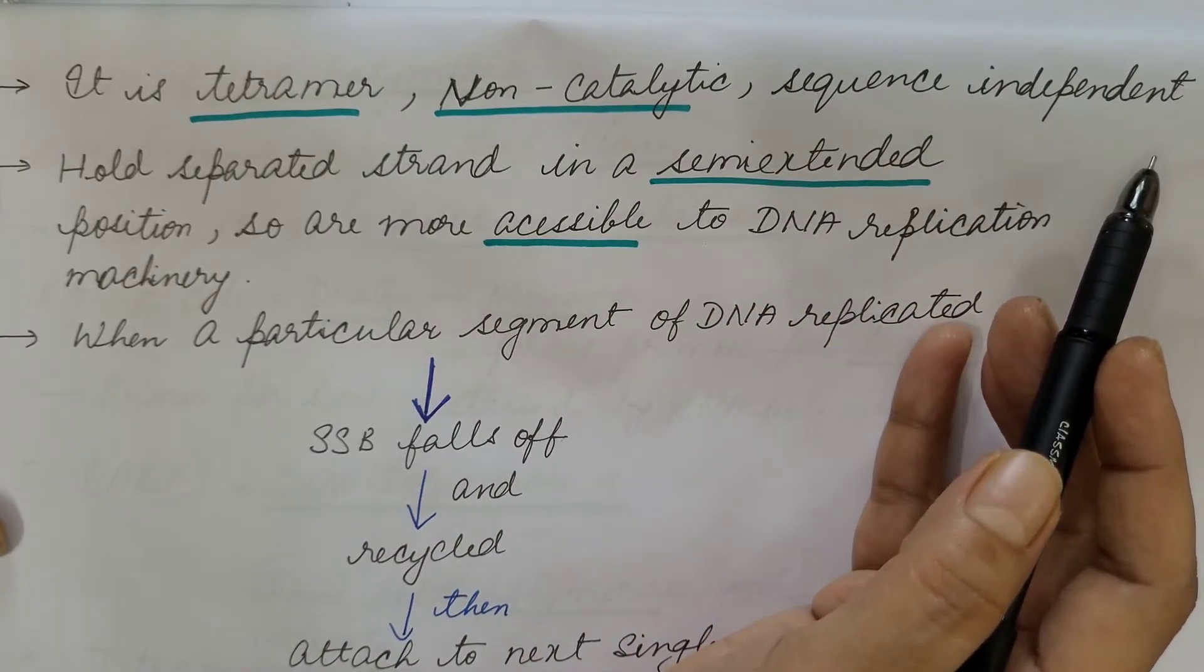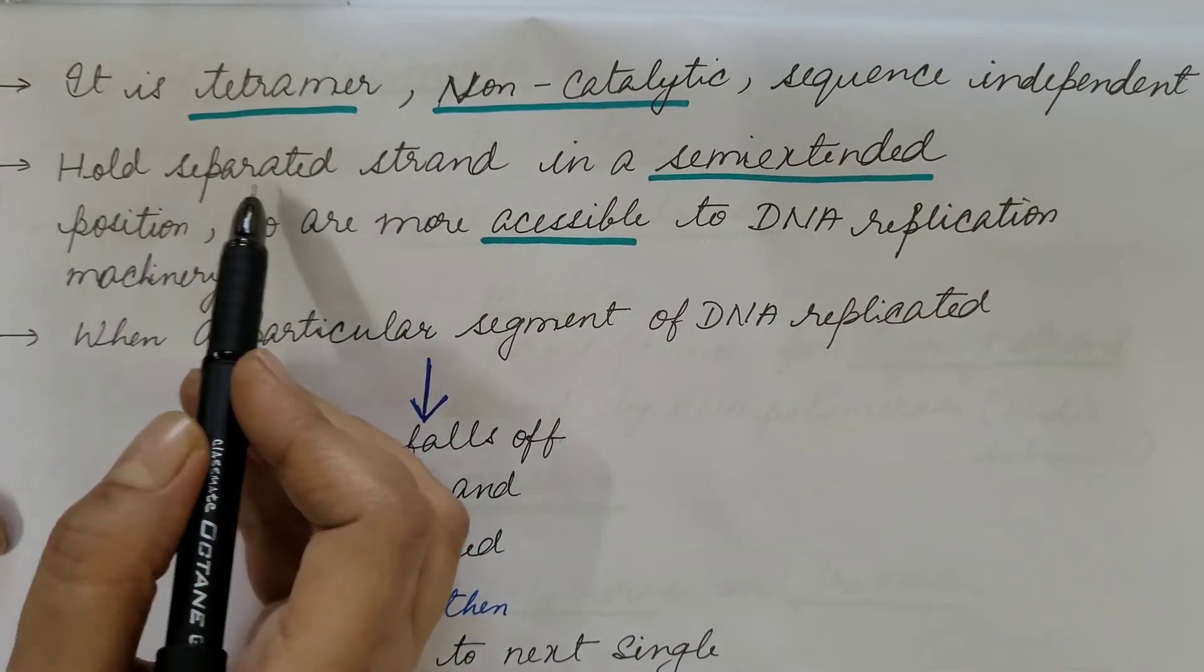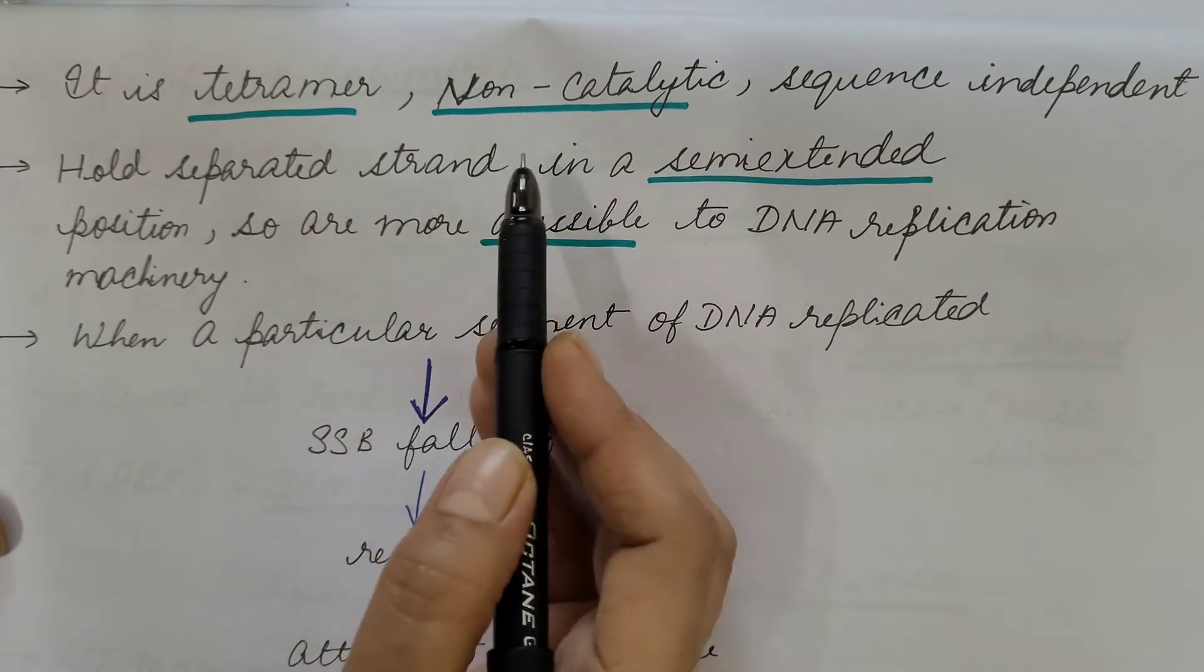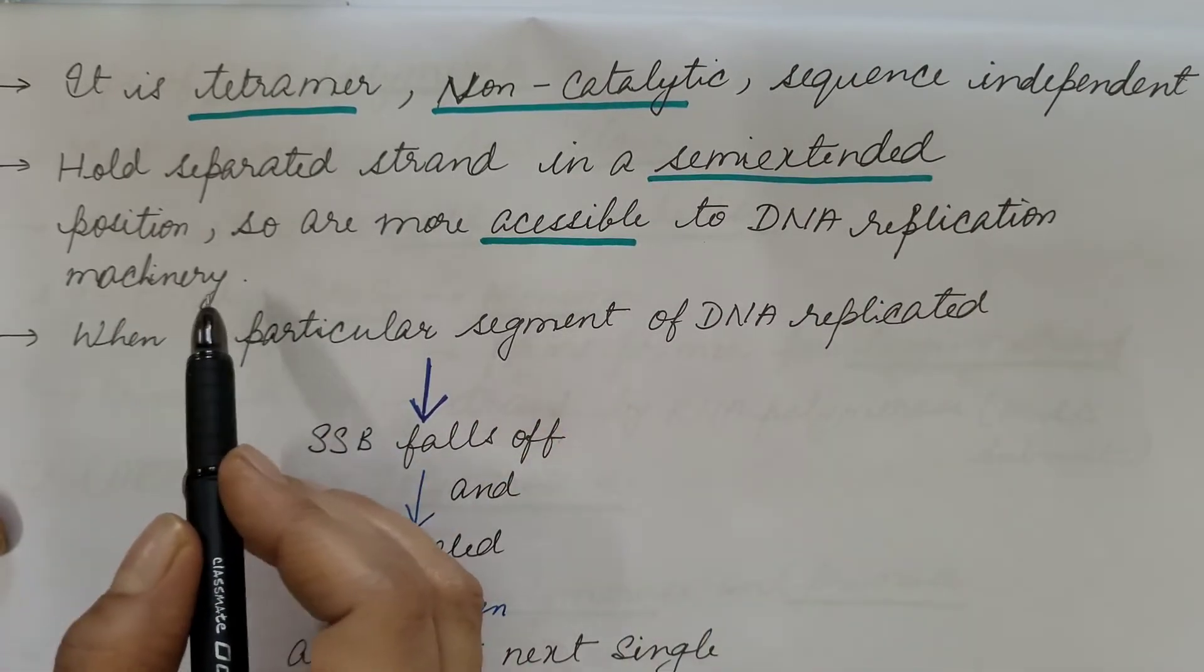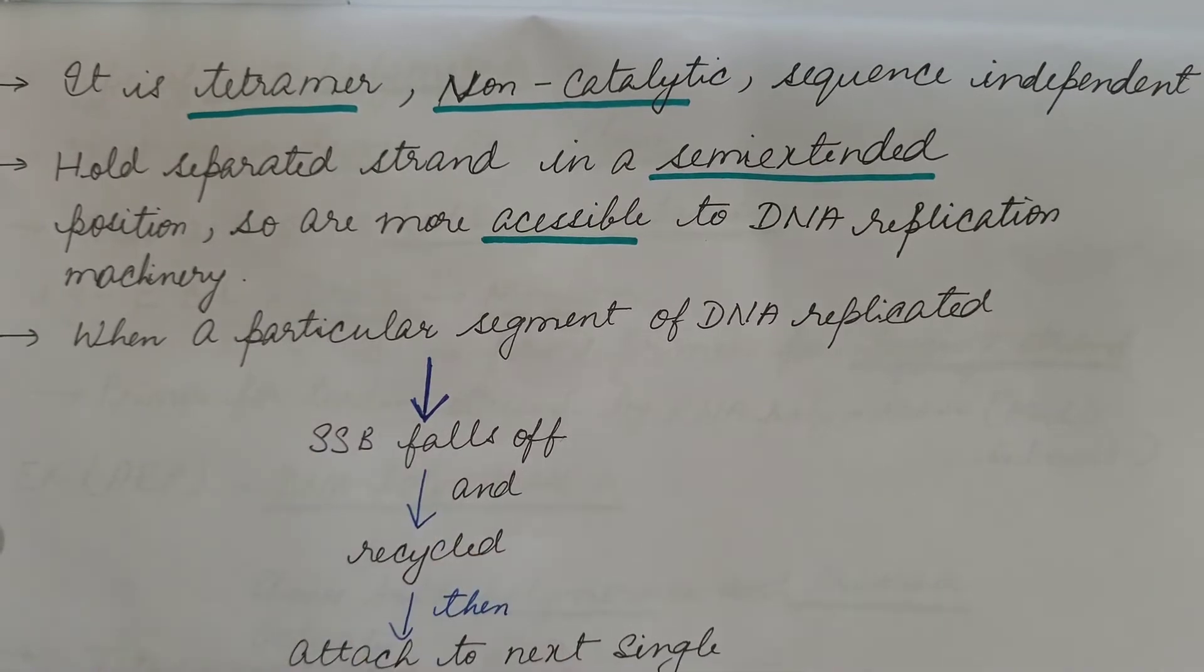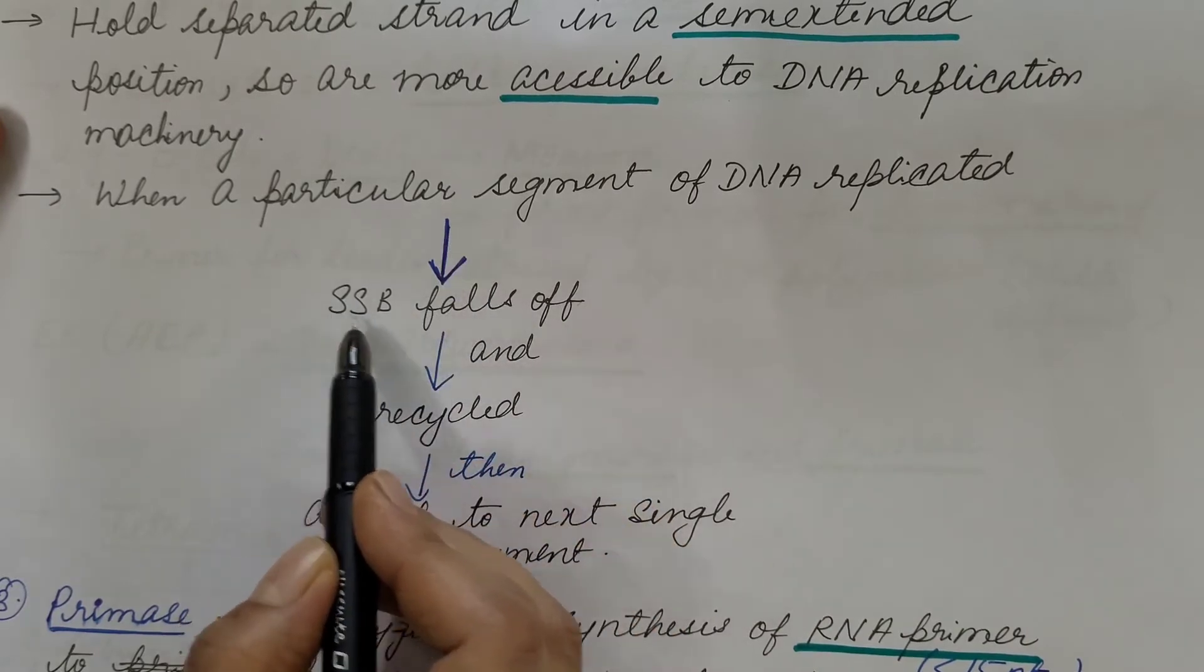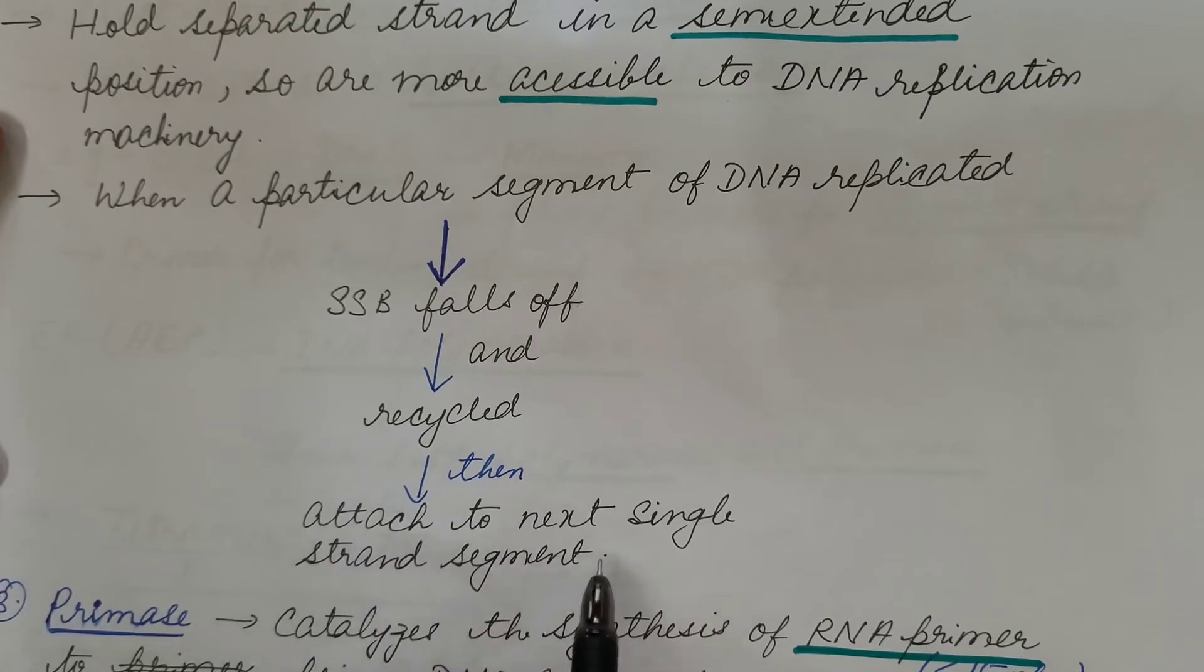It holds a separated strand in a semi-extended position, so this strand which is semi-extended is more accessible to the DNA replication machinery. DNA replication machinery comes and can easily bind to it, and hence the replication of DNA takes place. When a particular segment of the DNA is replicated, then single strand binding protein falls off and it is recycled, and then it is attached to the next single strand segment. In this way, the process goes on.